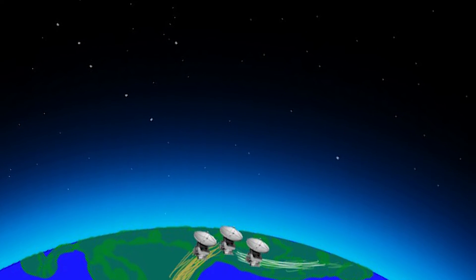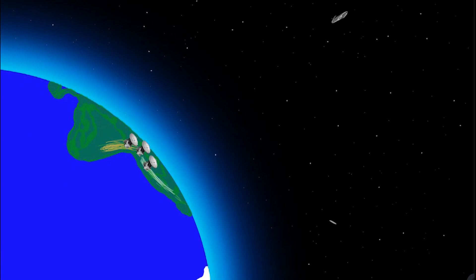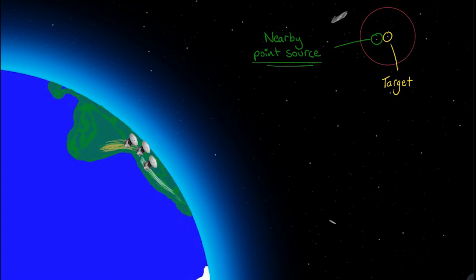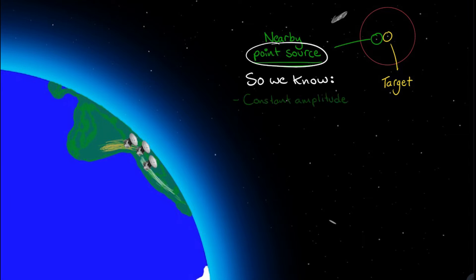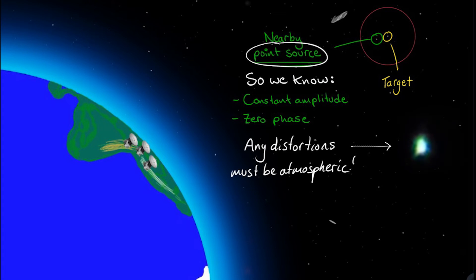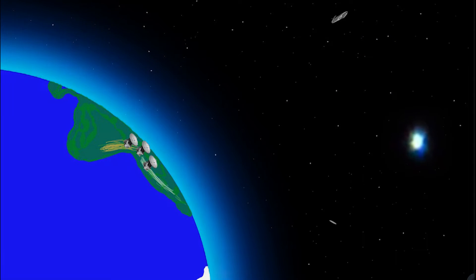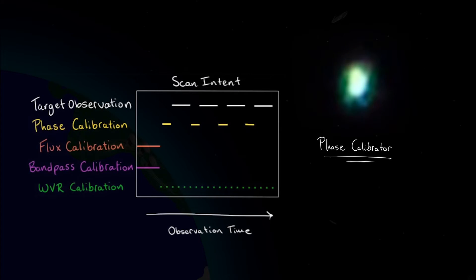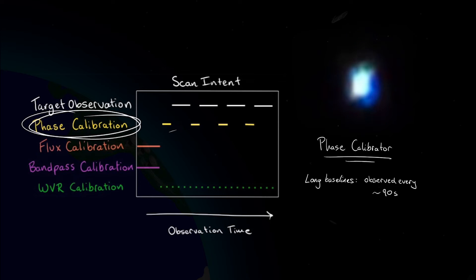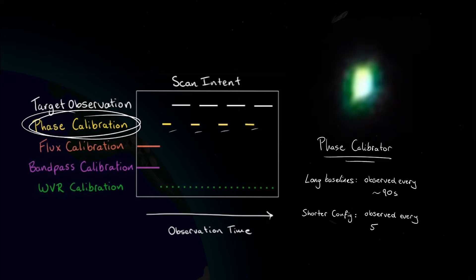Other distortions of both the phase and amplitude of the incoming signals can vary over timescales of minutes and are monitored using periodic observations of a moderately bright, very compact source within a few degrees of the science target. The best sources are unresolved at the angular scales probed by the array. We choose a point source because if the source has no angular size, any phase shift or amplitude variation imparted to the signal must be from the net atmospheric distortion. The cadence at which the phase calibrator is observed depends on the stability of the atmosphere, the frequency of the observation, and the maximum baseline length. For ALMA in long baseline configurations, the phase calibrator is observed every 90 seconds, but only every 5 to 10 minutes at smaller baseline configurations.